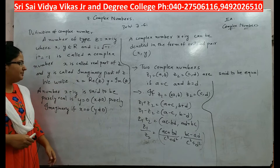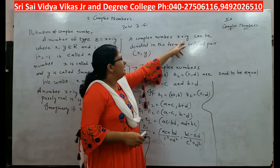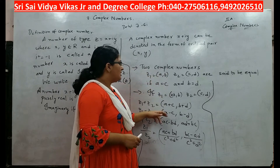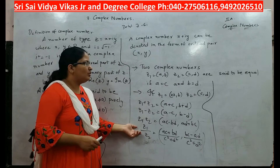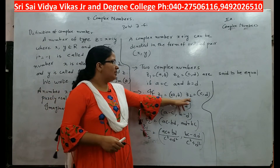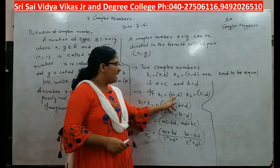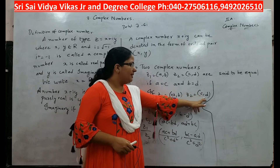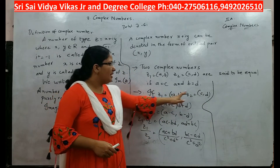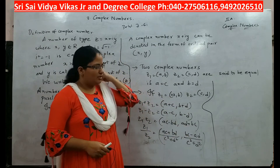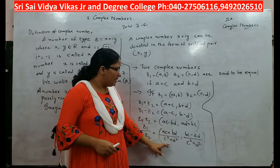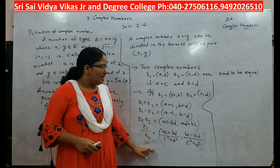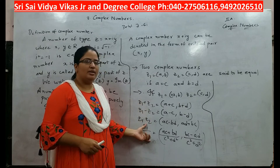You can denote x plus iy in the form of an ordered pair as (x, y) in column brackets. Now, how to add and multiply two complex numbers: if z1 = (a, b) and z2 = (c, d) are two complex numbers, then z1 plus z2 is (a+c, b+d), z1 minus z2 is (a−c, b−d), z1 times z2 is (ac−bd, ad+bc), and z1 divided by z2 is (ac+bd)/(c²+d²), (bc−ad)/(c²+d²).